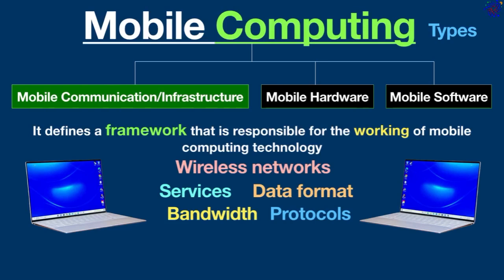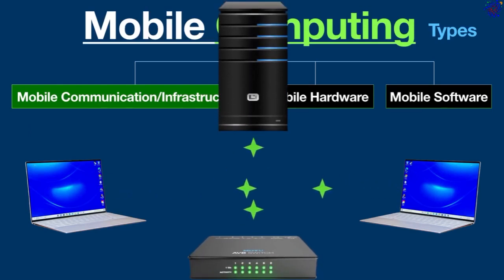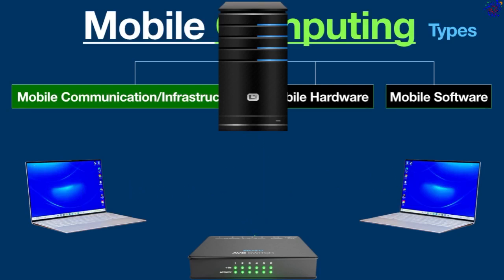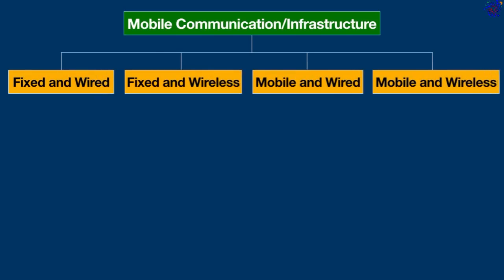Keep in mind, the main purpose of mobile infrastructure is to ensure that there is no collision with other existing systems that offer the same service. Mobile communication or infrastructure can be divided into the following four types.